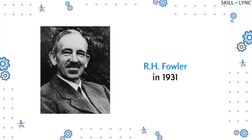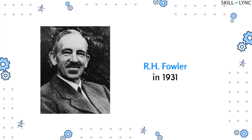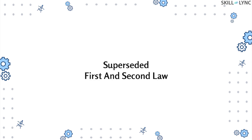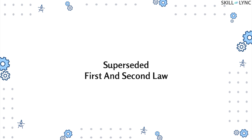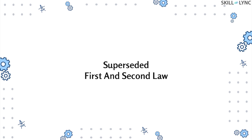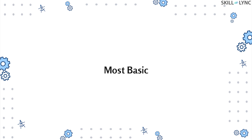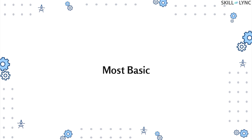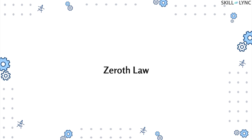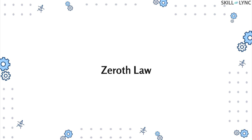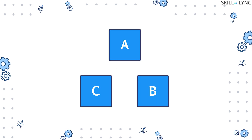Moving back to the zeroth law, it was formulated by R.H. Fowler in 1931. Back then, the first and second laws already existed, and this new law superseded the other two. This is because the new law was the most basic out of all the three laws, and hence it was designated as the zeroth law of thermodynamics.